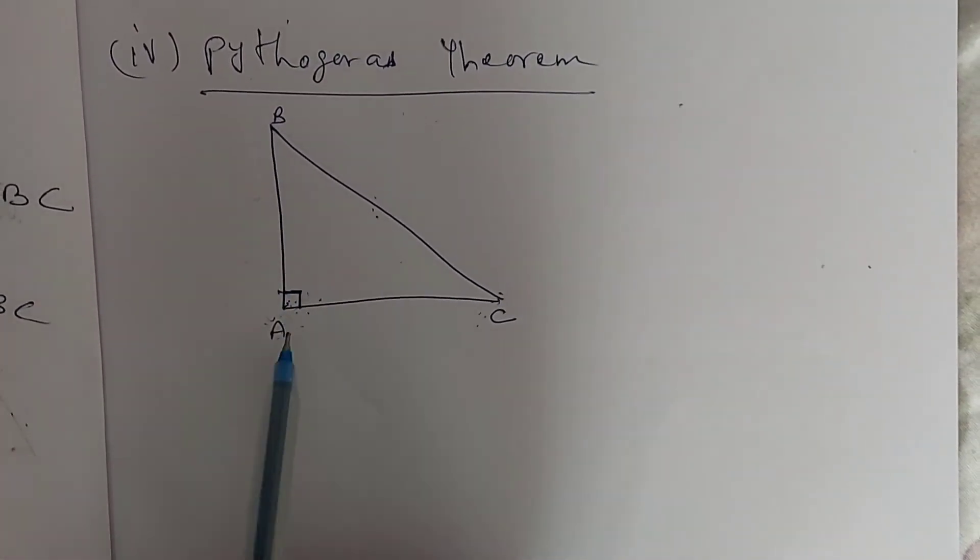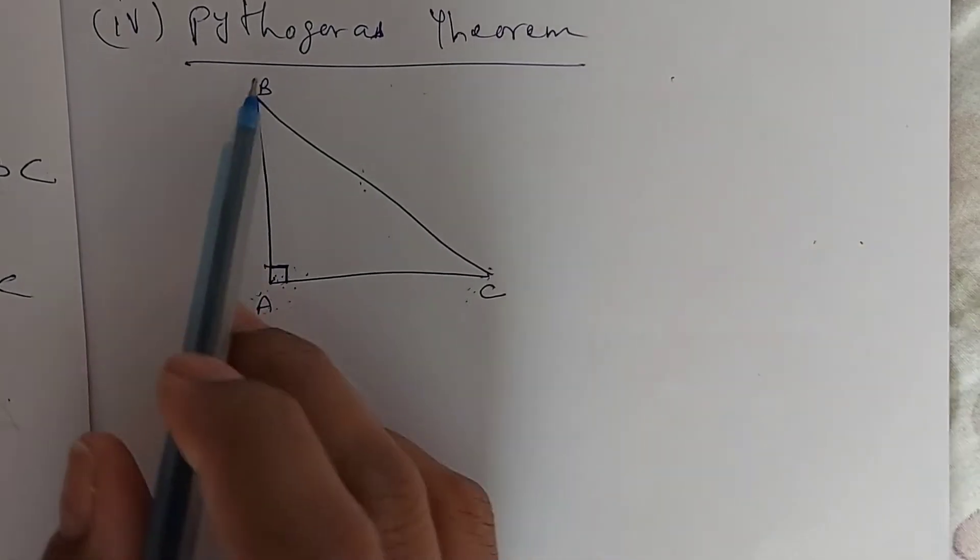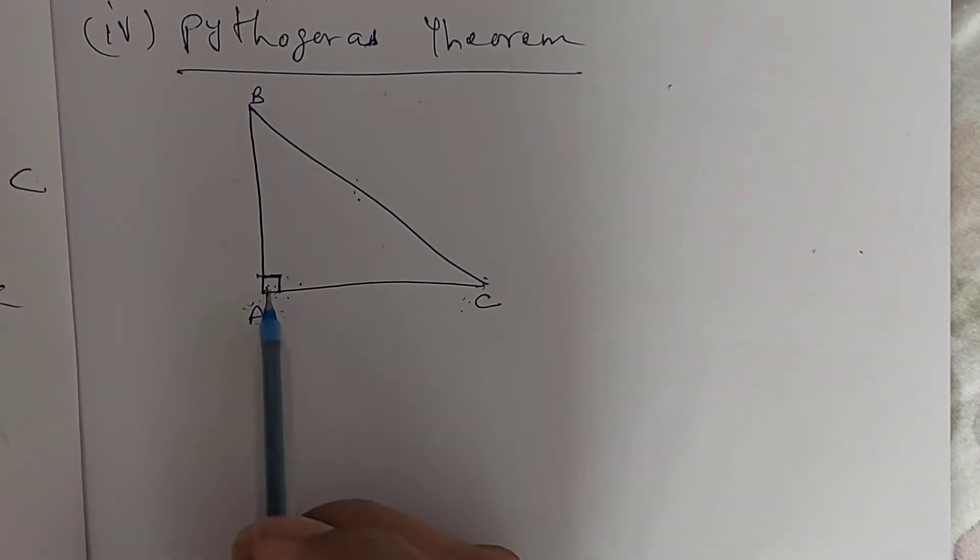That is, let us suppose if we take a triangle, that is right-angled triangle A, B, C, right-angled at A.